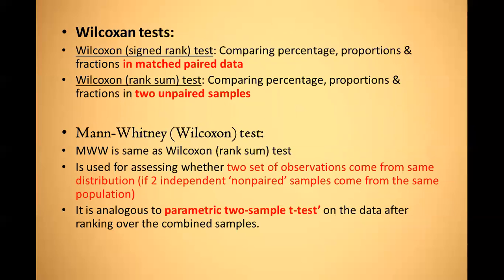Next is the Wilcoxon test. The Wilcoxon signed-rank test is used in matched paired data, and the Wilcoxon rank-sum test is used in two unpaired samples. The Mann-Whitney test is used for assessing whether two sets of observations come from the same distribution — that is, if two independent non-paired samples come from the same population.